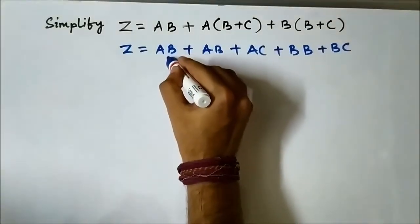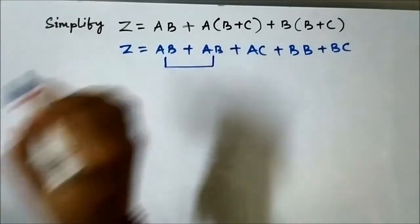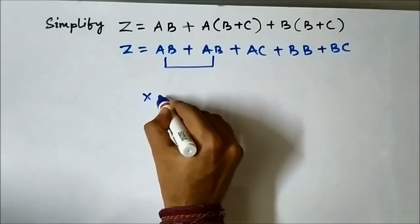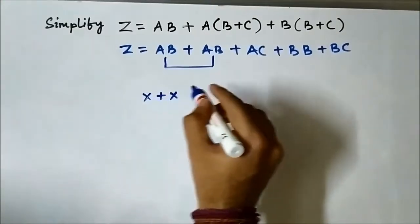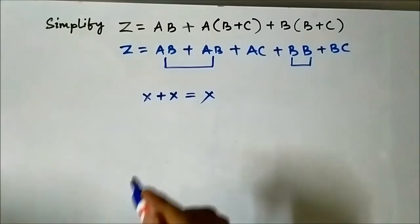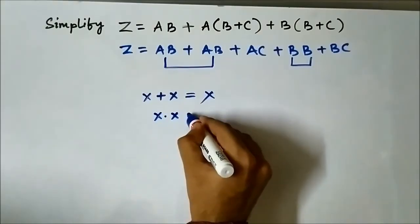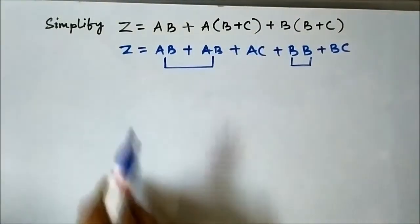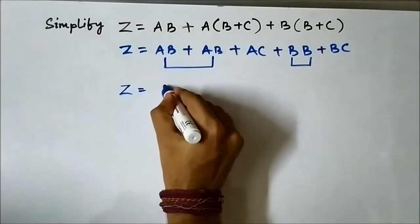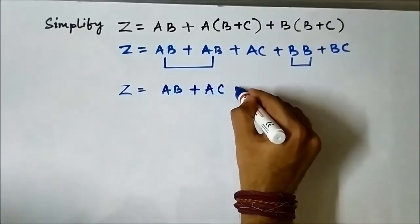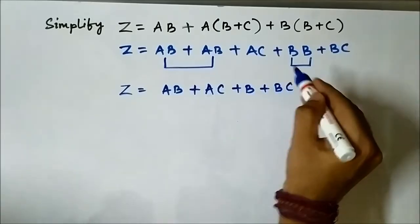Focus here — a Boolean algebra rule will come into play. According to one of the OR rules, if two same Boolean variables are OR-ed together it results in the same Boolean variable: x plus x equals x. Here two same Boolean variables are AND-ed together, so it results in the same Boolean variable. Applying the Boolean rules, these two add up to give: ab plus ac plus b plus b plus bc.